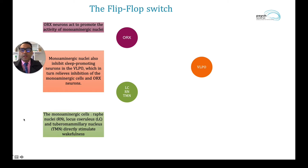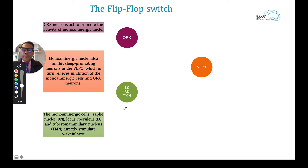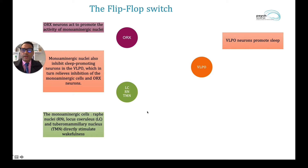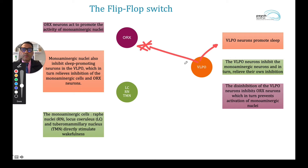The orexin neurons can be considered the wakefulness neurons. They also stimulate the monoaminergic nuclei, which are also wakefulness neurons. The monoaminergic nuclei play an important part in inhibiting the sleep-promoting nuclei, which are the VLPO. The monoaminergic nuclei also directly stimulate wakefulness. In summary: orexin neurons promote wakefulness, the monoaminergic nuclei stimulate wakefulness directly but also inhibit the sleep-promoting VLPO nuclei. The VLPO neurons promote sleep by inhibiting the monoaminergic nuclei, which in turn disinhibits orexin inhibition, thus promoting sleep.